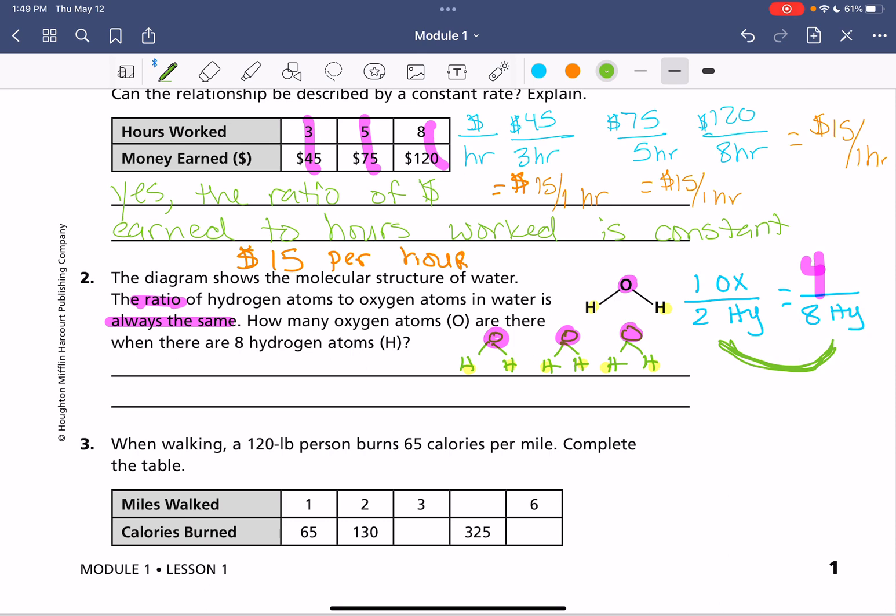So 2, how are we going to get from 2 to 8? What operation could we do and what number would be involved? Pause if you need to talk about it. We're going to need to multiply by 4. That's going to be our constant here times 4.